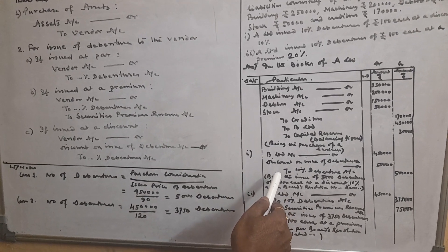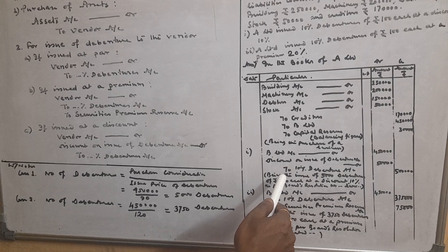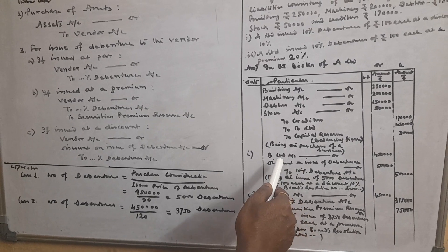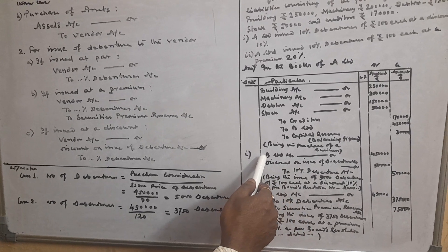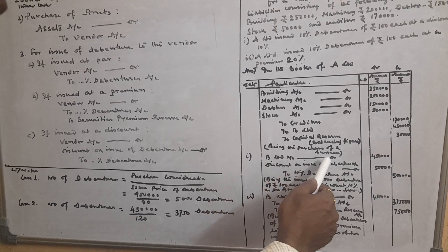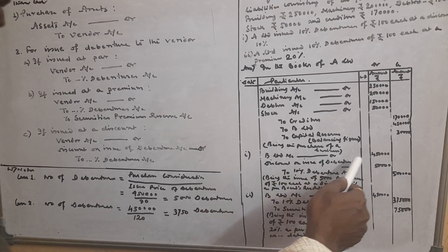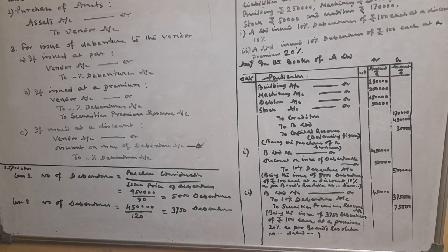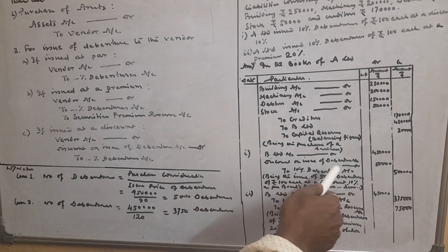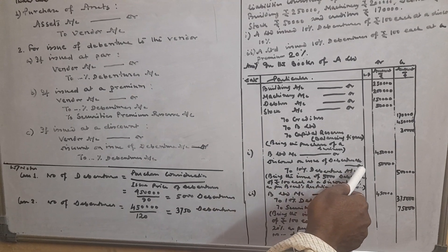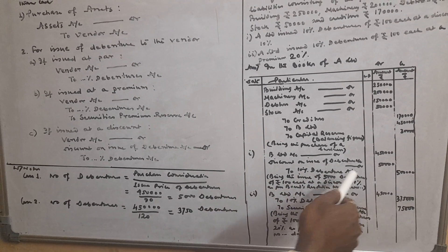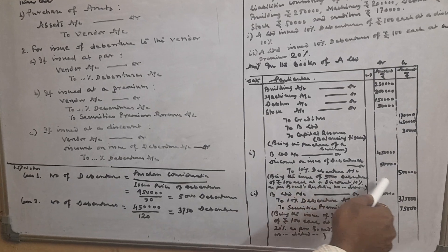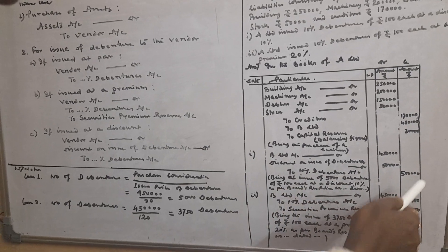Now B Limited was paid off by issue of debentures at a discount of 10 percent. The accounting entry will be: B Limited Account debit 4 lakh 50 thousand, Discount on Issue of Debenture Account debit 50 thousand, to 10 Percent Debenture Account — it will be 5 lakh.